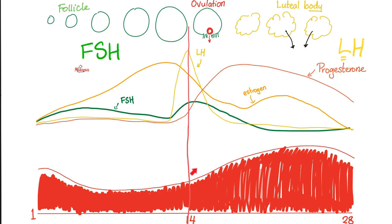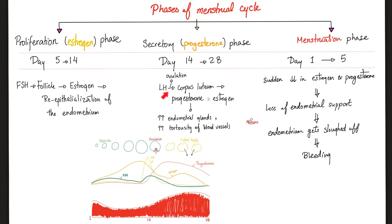What's happening in the uterus? In the first half — the estrogen phase — estrogen helps the uterus grow. In the second half, progesterone helps the endometrium proliferate even more and adds numerous blood vessels to prepare for implantation. The blastocyst implants here and the embryo gets nutrition from those blood vessels. First half: estrogen, proliferative phase, driven by FSH. Second half: progesterone dominant (with some estrogen), secretory phase, driven by LH.